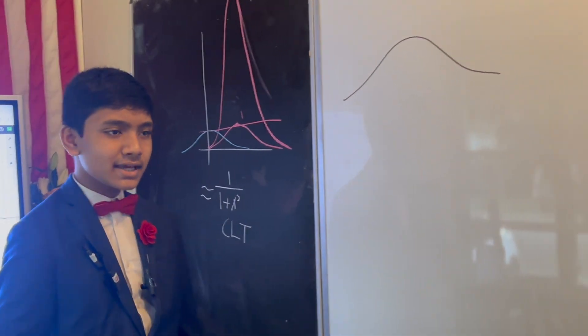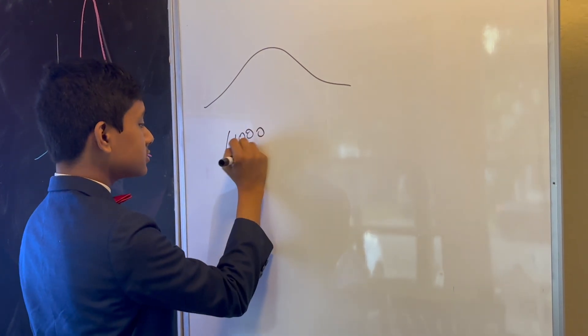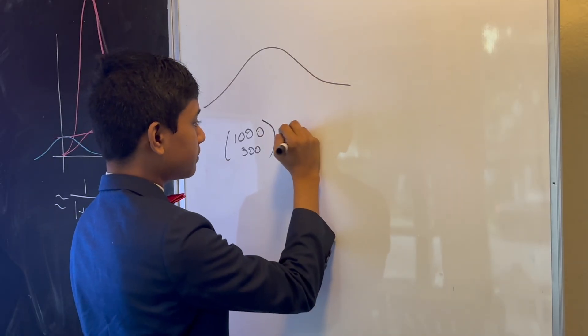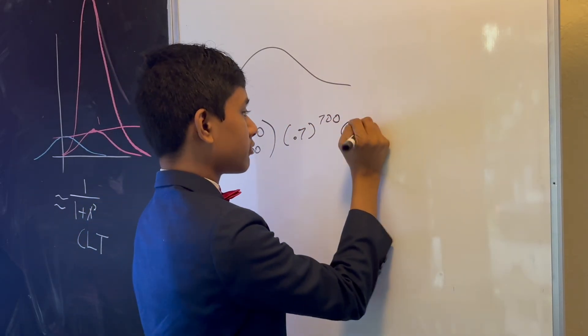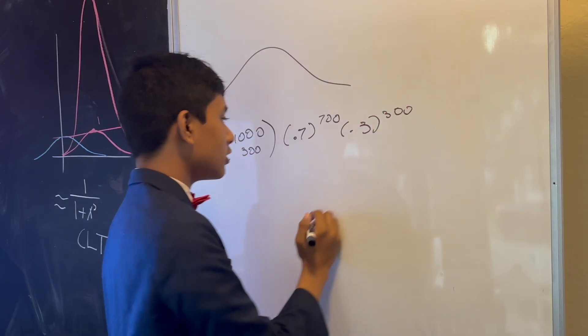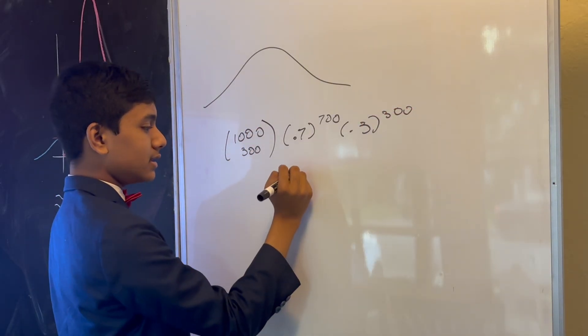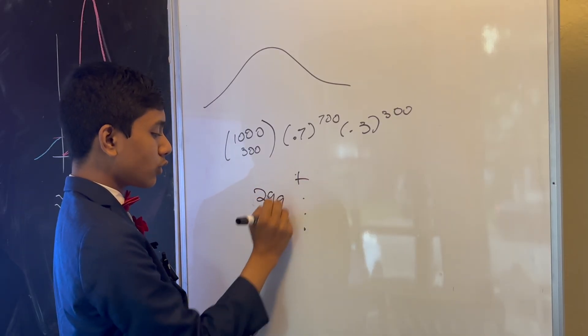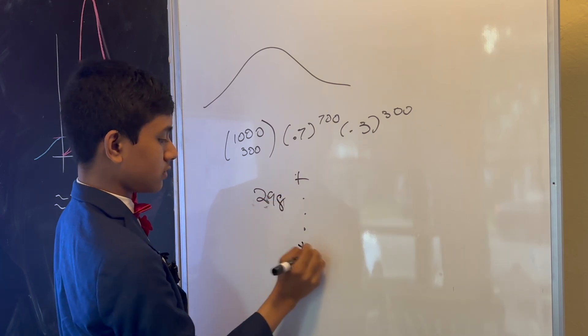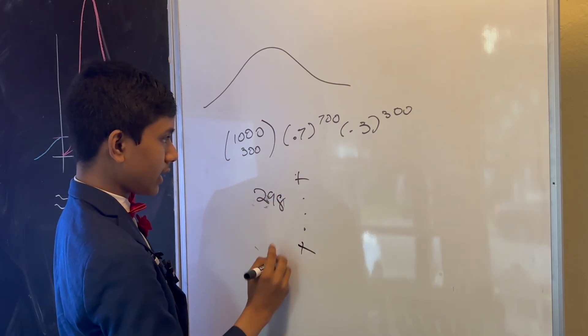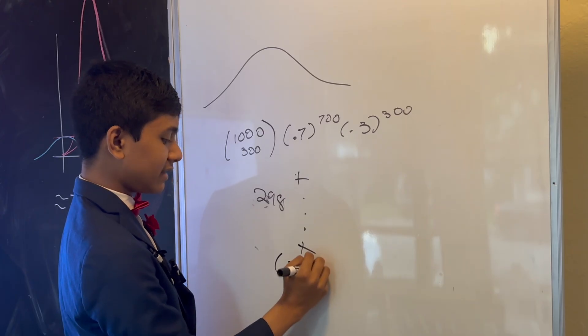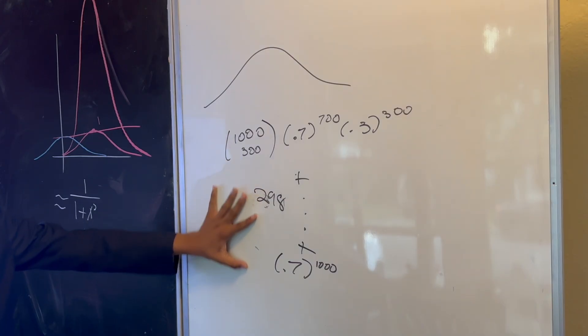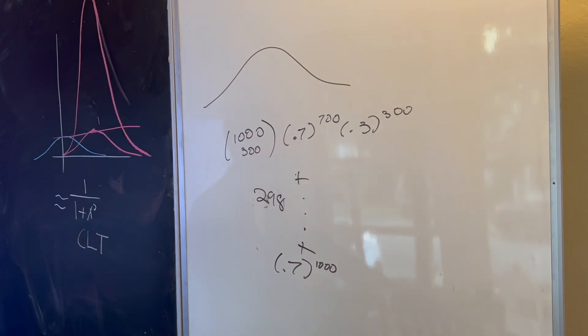All you have to do is, instead of adding up 1,000 choose 300 times 0.7 to the 700, 0.3 to the 300, this would already break a lot of our modern computers. Now you have to add that up with 299 more terms, all the way up until you get 0.7 to the 1,000. And I mean, this would take so long that it's pointless. But here's what you can do.